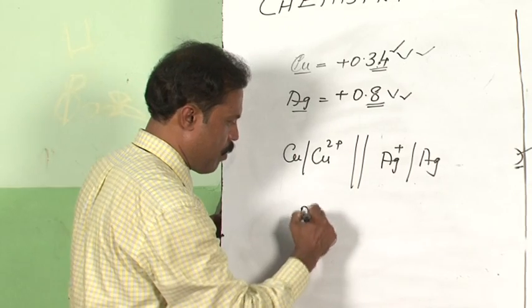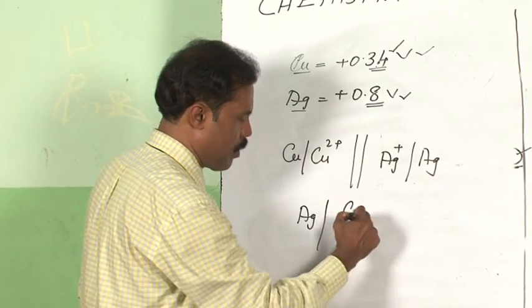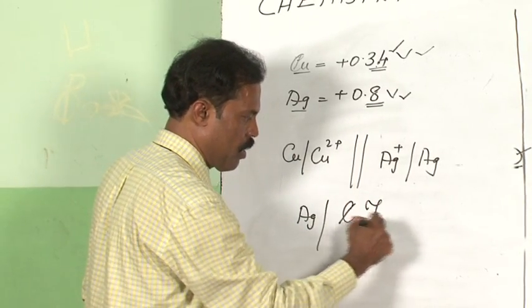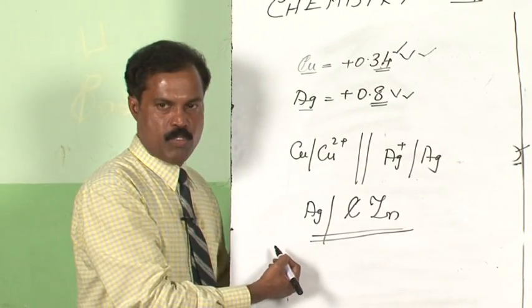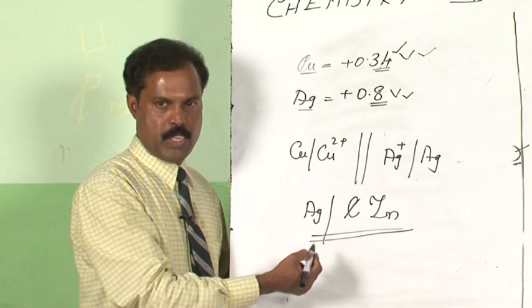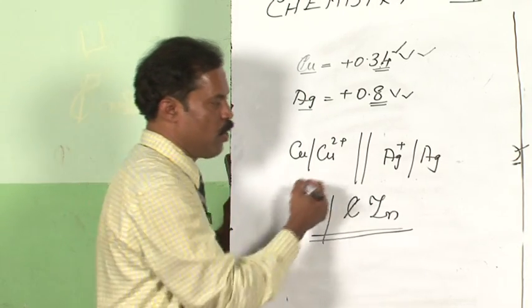Suppose you set up a cell between silver and copper, silver and zinc - see which part will act as an oxidation half, which part will act as a reduction half, and how would you represent a cell?